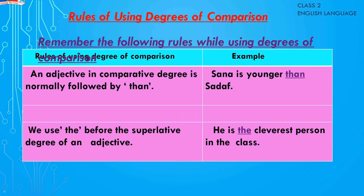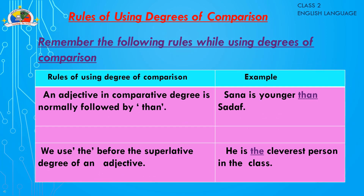Remember the following rules when using degrees of comparison: An adjective in the comparative degree is normally followed by 'than' — for example, 'Sana is younger than Sadaf.' Use 'the' before the superlative degree of an adjective — for example, 'He is the cleverest person in the class.'